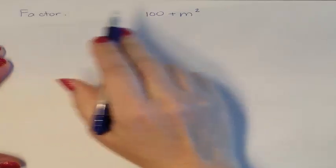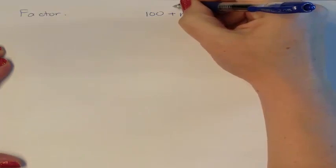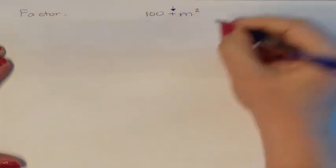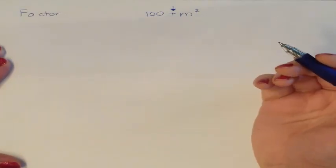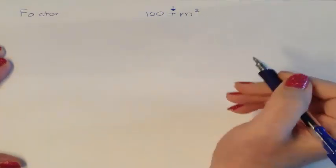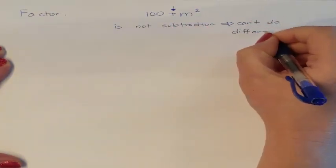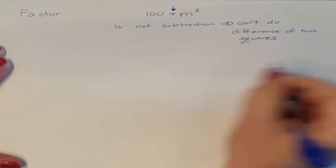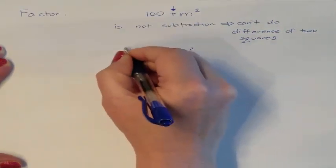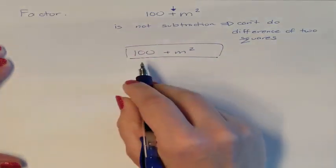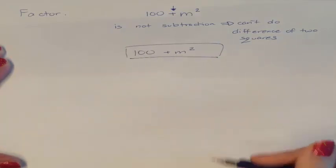Our next problem: we're being asked to factor. It is two terms, so we want to see, can we do the difference of two squares? This is not a subtraction problem — it is not a difference problem. If it is not a difference problem, you cannot do the difference of two squares, and therefore it's not factorable. So if it's not factorable, your final answer is the original problem you were left with. You are not writing 'not factorable,' you're not writing 'no solution.' This is the factored form — it's as fully factored as it's going to go.